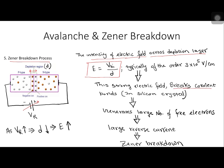This high electric field breaks the covalent bonds in the silicon crystal. Once covalent bonds are broken, it generates a large number of free electrons. These free electrons can generate a large reverse current, and we say the junction has undergone Zener breakdown. So Zener breakdown is due to high electric field intensity, and avalanche breakdown is due to the carrier multiplication factor.